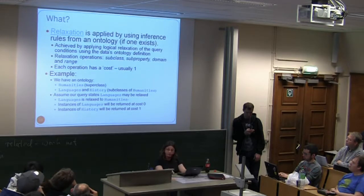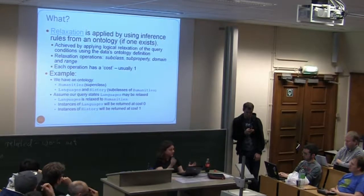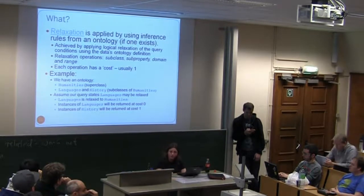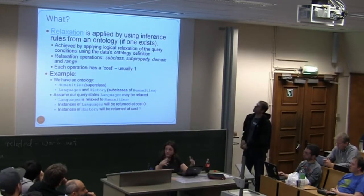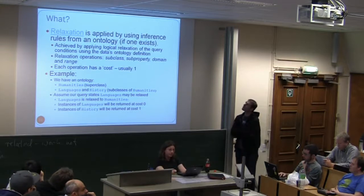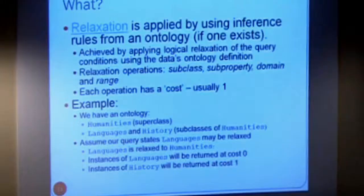Operation number two is relaxation, which uses an ontology if one exists. The speaker notes that ontologies are usually thought of in terms of RDF data, but there's nothing stopping them being used for any graph-modelled structure - it's a very useful thing. Essentially, this applies logical relaxation and inferencing of query conditions using an ontology associated with the graph, using four operations, focusing on the subclass one.